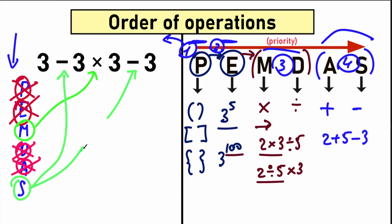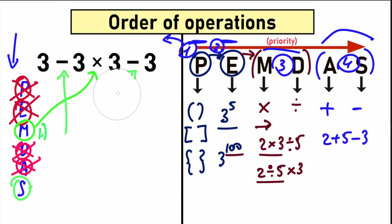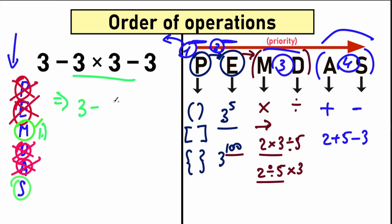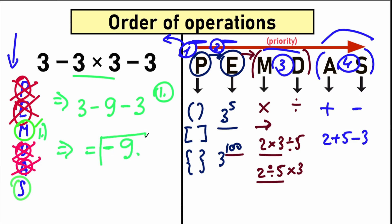So multiplication is our first step and subtraction is our second step. As a result: we have 3 minus (3 times 3) minus 3. We multiply 3 times 3 to get 9. So now we have 3 minus 9 minus 3. The second step: we subtract from left to right — 3 minus 9 minus 3, which equals minus 9. So minus 9 is our correct answer.